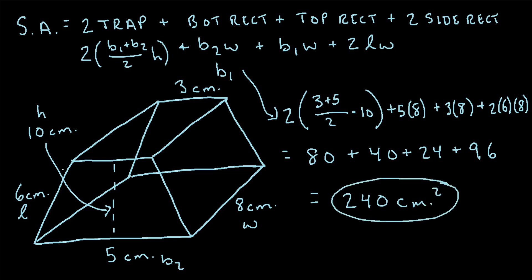So the surface area of this trapezoidal prism is 240 centimeters squared. You can use this exact same process to find the surface area of any trapezoidal prism: just find the area of the two trapezoids, add the area of the bottom rectangle, then add the area of the top rectangle, and then add the area of the two side rectangles.